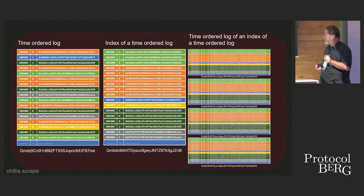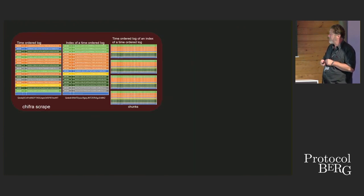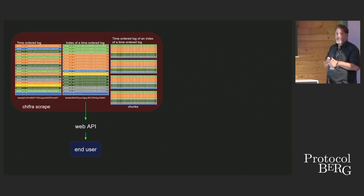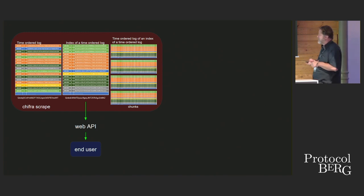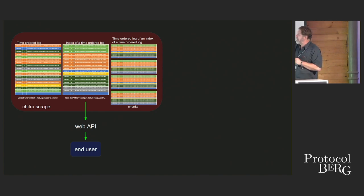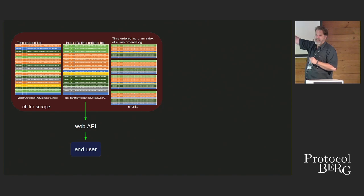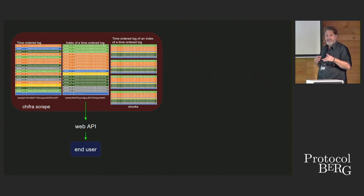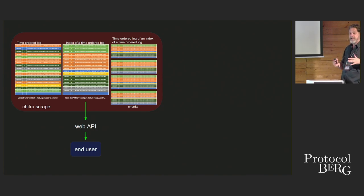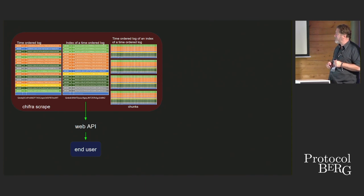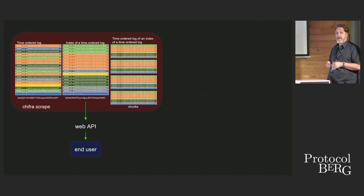A regular Web2 API takes that sorted index and delivers it directly to the user. The problem with that relationship is that the end user is begging a centralized party to give access to his data — that's not permissionless, it's not reproducible, he can withhold or lie about the data. This is exactly what we thought we were solving with blockchains, and I think allowing this to happen is a mistake.